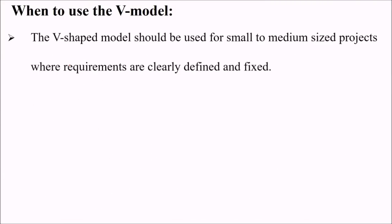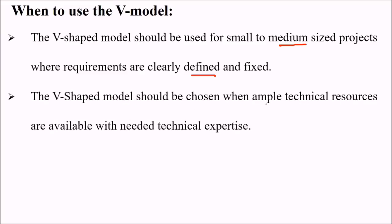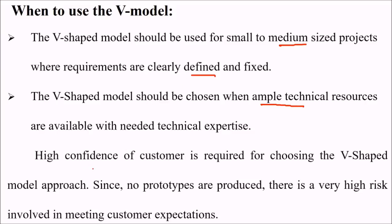So when to use V-model? The V-shape model should be used for small or medium sized projects where requirements are clearly defined and they are fixed. The V-shape model should be chosen when ample technical resources are available with needed technical expertise. High confidence of customer is required for choosing this V-shape model approach.